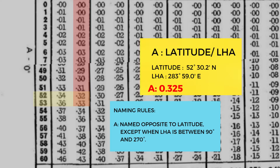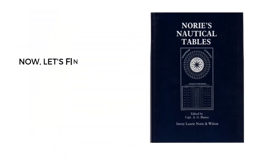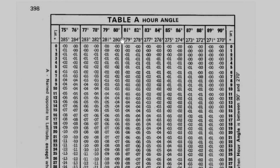Hence for this instance, we're giving it a southern name. Next, let's find B. Using the same book, remember that B consists of LHA and declination. This one is easier to find since you already located A — B will just be on the next page.